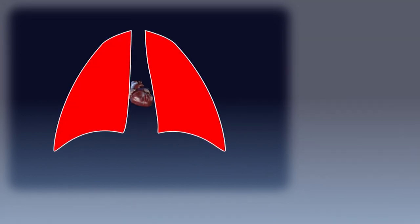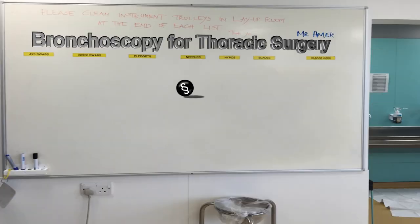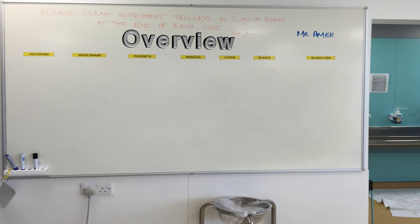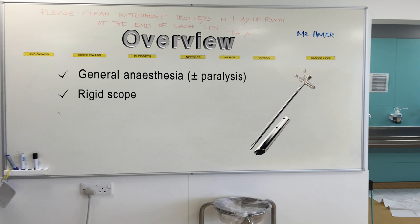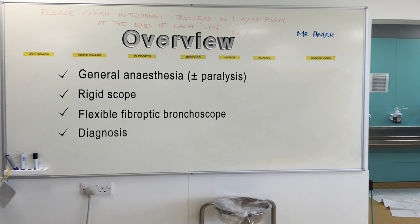The oblique fissure on the left separates five segments above it from four below it. Bronchoscopy at our unit is performed under general anaesthesia just before the operation, usually in the anaesthetic room next to the operating room. We introduce the rigid bronchoscope first and then the flexible fibre optic scope through the rigid scope. This arrangement allows precise diagnosis due to excellent vision, with the ability to convert the diagnostic procedure into a therapeutic one should the need arise.